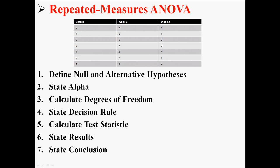So this repeated measures ANOVA has seven steps. We're going to state the hypotheses, state the alpha, calculate the degrees of freedom, state the decision rule, find the test statistic, and then state our results and conclusion.